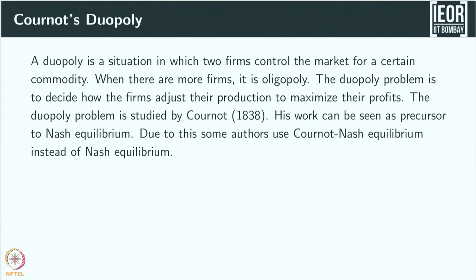We will now see another example known as Cournot duopoly. A duopoly is a situation where two firms want to control the market for a certain commodity. When there are more than two firms, it is called an oligopoly. The duopoly problem is about how firms adjust their production to maximize profits. This was studied by Cournot as far back as 1838, and his work can be seen as a precursor to Nash equilibrium — hence the term Cournot-Nash equilibrium.